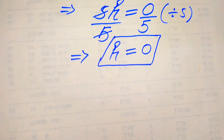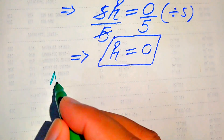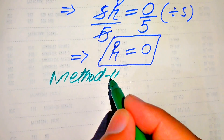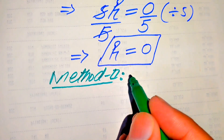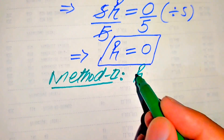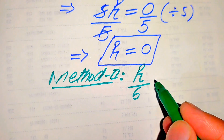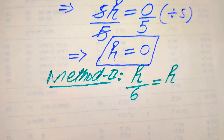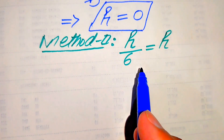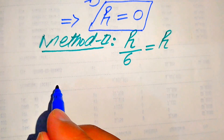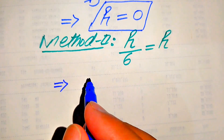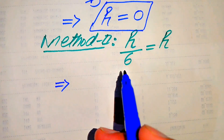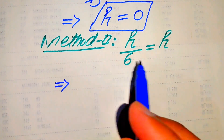Now we solve this problem using the second method. We copy down the given equation: h over 6 equals h. In the second method, we move h to the left-hand side and make the denominator of both terms the same — we use the LCM technique to solve this problem.